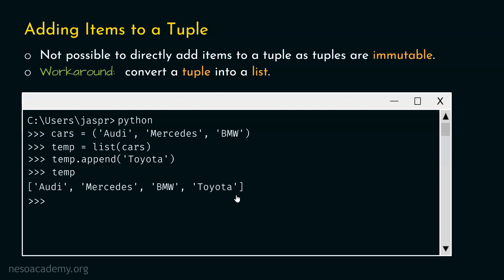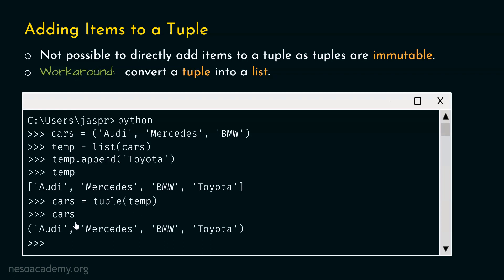For this, we will use the tuple() method. Let's type: cars = tuple(temp). Let's hit enter and type cars. We are getting this tuple with four items: Audi, Mercedes, BMW, and Toyota. We have successfully added this item in our tuple. This is a trick, but we can use it to add items to a tuple.